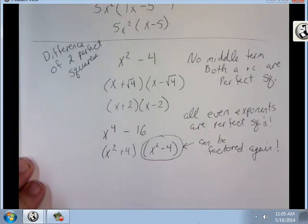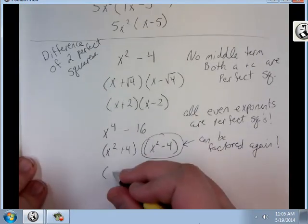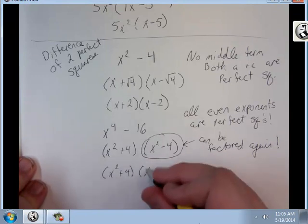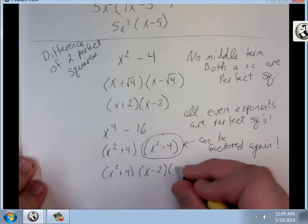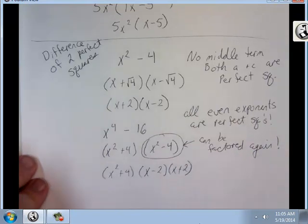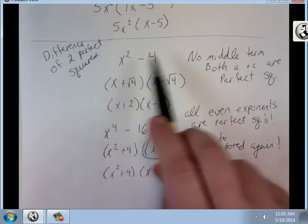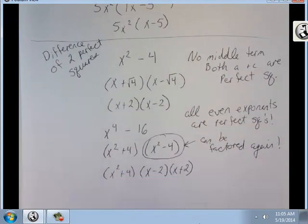And that one can be factored again. So I still have the x squared plus 4, but this one's going to be times x minus 2 times x plus 2. And that's difference of two perfect squares. It's just square root of the first term plus and minus the square root of the second term. And you have to just keep going until you've got all the terms factored.